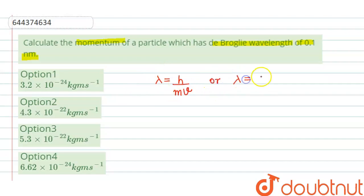Or we can write it as lambda equals h upon p, where p is the momentum of the particle and p equals mv. Now we have to calculate the momentum of the particle, so p equals h upon lambda.